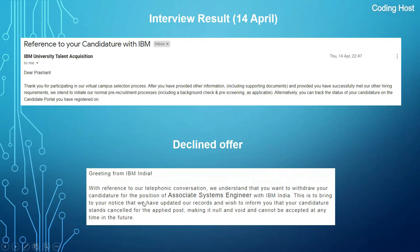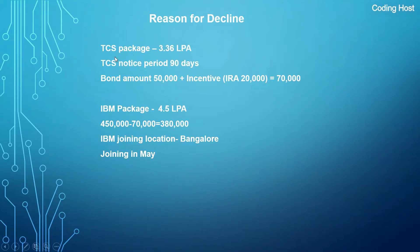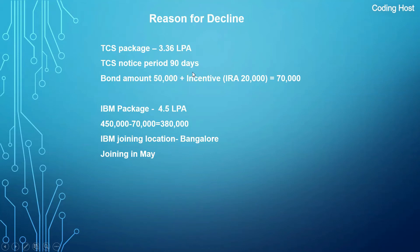You can see the email confirming the withdrawal of my candidature for the position of Associate System Engineer with IBM India, stating my candidature is cancelled and cannot be accepted in the future. The reason I declined: I am already working at TCS with a package of around 3.36 LPA. The TCS notice period is 90 days, and if you resign before one year you have to pay a fund amount of ₹50,000 plus any incentive received from clearing IRA or CP exams. In my case I received ₹20,000 from the IRA exam, so in total I had to pay ₹70,000 to TCS to resign.